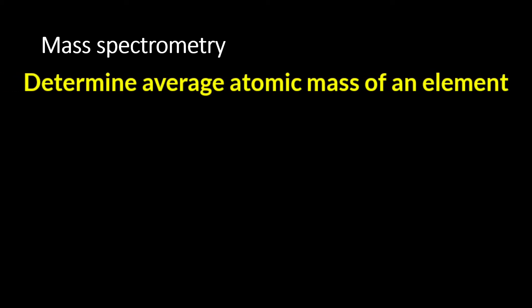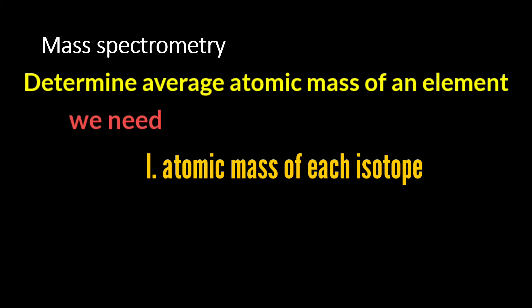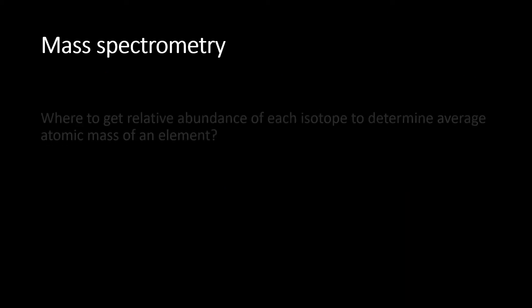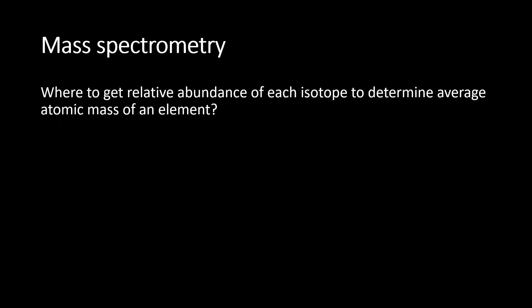In previous video, I have explained on how to determine the average atomic mass of an element. To determine the average atomic mass of an element, we not just need the atomic mass of each isotope, but also we need the relative abundance of each isotope. So how do we get the relative abundance of each isotope to determine the average atomic mass of an element?